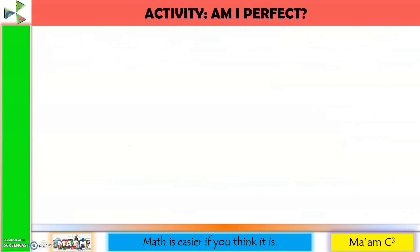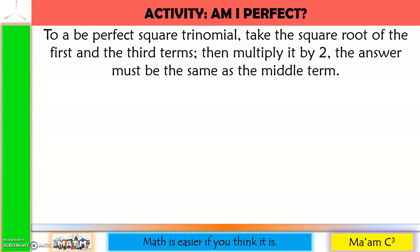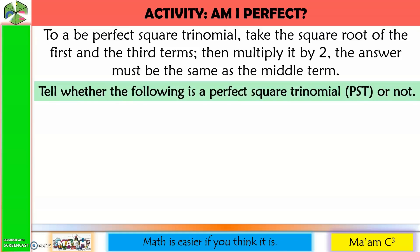Let's have an activity called 'Am I Perfect?' To be a perfect square trinomial, take the square root of the first and third terms, then multiply by 2. The answer must be the same as the middle term. Let us tell whether the following is a PST — perfect square trinomial — or not.